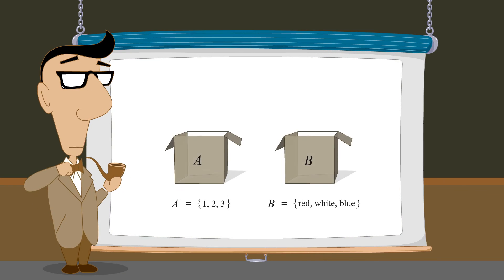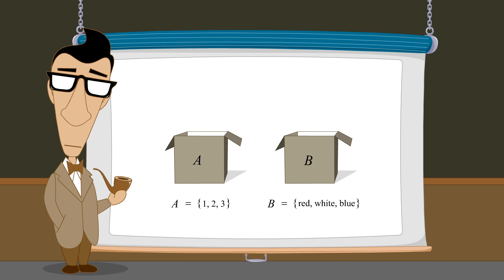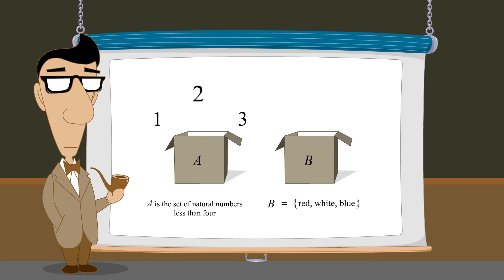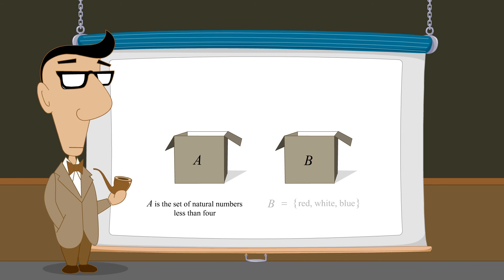Instead of listing each member, a set can also be defined by stating the properties that its members must satisfy. For example, for set A, instead of listing the elements, we could say that A is the set of natural numbers less than 4. And we could define set B as the set of colors of the American flag.